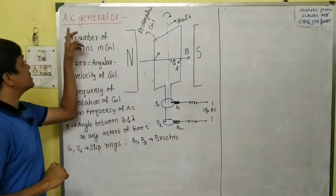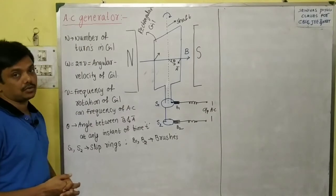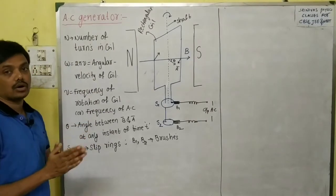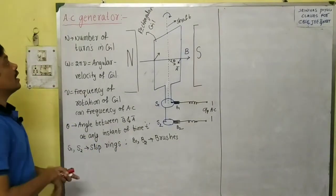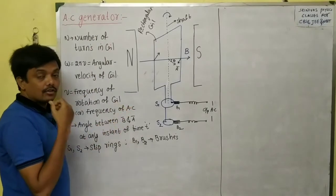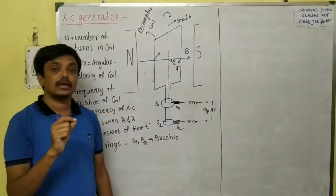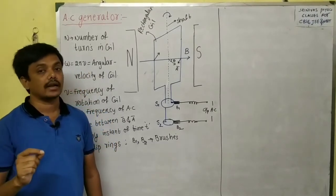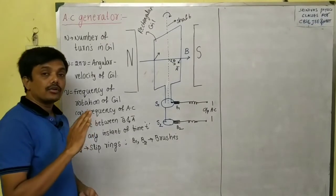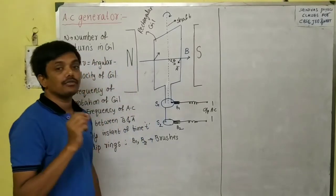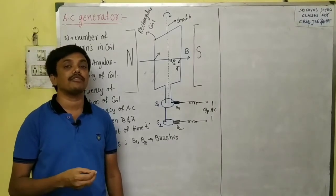Today's topic is AC generator, one topic in electromagnetic induction. An AC generator is an alternating current generator — it generates current by the induction process, that is electromagnetic induction. Electromagnetic induction is the induction of EMF and current in a coil due to a change in magnetic flux linked with it. If the magnetic flux linked with a coil changes, then EMF and current are induced in the coil.